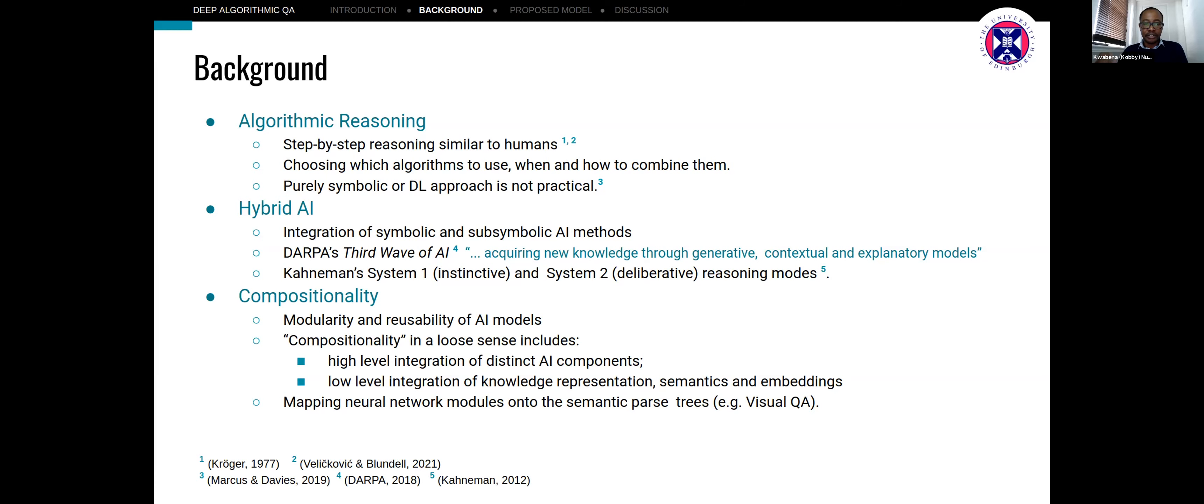Hybrid AI focuses on integrating symbolic and subsymbolic methods. Our inspiration is taken mostly from DARPA's third wave of AI and Kahneman's System 1 and System 2 reasoning modes. In terms of compositionality, we are interested in the modularity and usability of AI models. We take a loose interpretation of compositionality here because we're looking both at high level integration of distinct components as well as low level integration of representation and semantics.